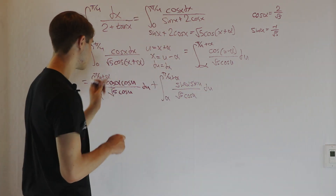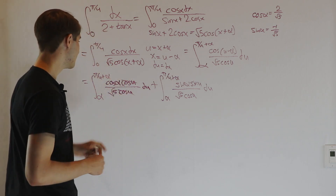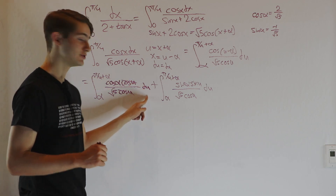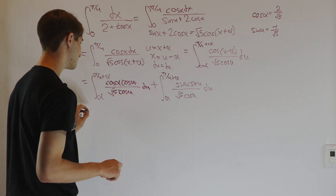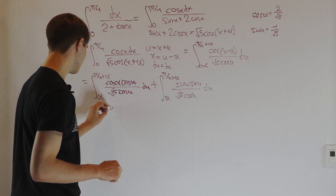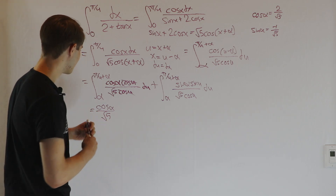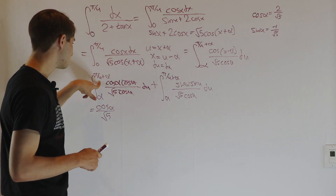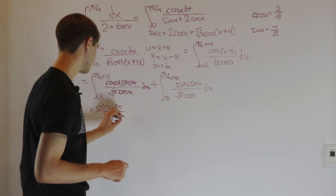In the first integral, we have cos u on top and cos u on the bottom — those cancel out. So cos α over √5 is just a constant with respect to u, and the first integral gives us cos α over √5 times u evaluated from α to π/4 + α, which is just π/4.